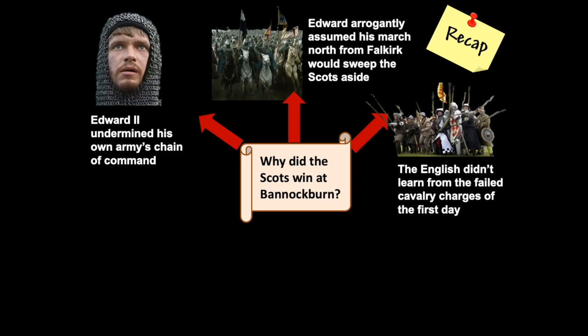An example of this is that the English did not learn from the failed cavalry charges on the first day of the battle. When de Bohun led his cavalry charge towards the exposed Bruce, Bruce's spearmen — his Shiltrum — emerged from the trees in the King's Park and drove off the cavalry charge of the English vanguard. This was repeated when Robert Clifford also tried to ride past St. Ninian's Kirk to get through to Stirling, and Moray's spearmen successfully blocked a charge of English knights. The English did not learn from these turnarounds on day one, and began day two with a massed charge of knights against Bruce's spearmen, which also did not go well.